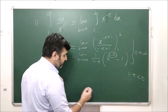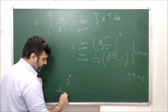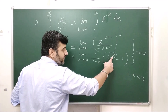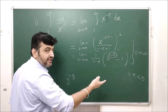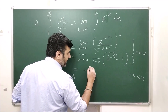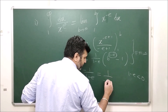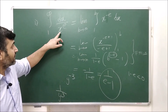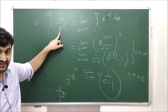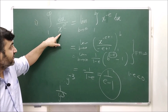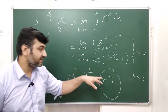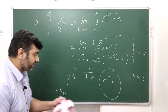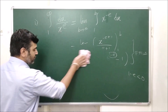Since e ≈ 2.718, we have 1 − e < 0, which means B^(1−e) = 1 / B^(e−1). As B → ∞, this goes to 0. So the result is −1/(1−e), which equals 1/(e−1). This integral converges to 1/(e−1). The area under the curve f(x) = 1/x^e over the domain [1, ∞) is the finite value 1/(e−1).